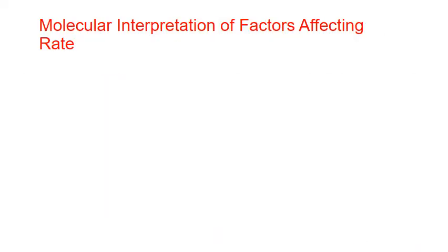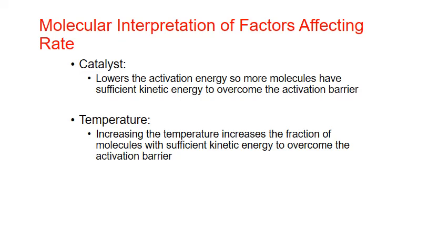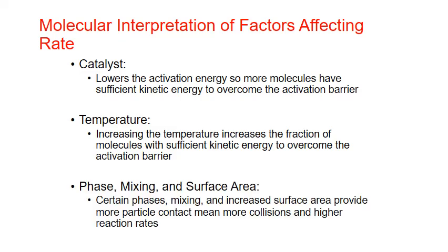Collision theory and the Arrhenius equation give us a basis for understanding why different factors like catalysts, temperature, phase, and mixing can influence reaction rate at the molecular level. Catalysts lower activation energy, and as we can see from the Arrhenius equation, with a lower activation energy, more molecules have sufficient kinetic energy to form an activated complex and overcome the activation barrier. Increasing the temperature also increases the fraction of molecules with sufficient kinetic energy to overcome the activation barrier. Certain phases, the degree of mixing, and increased surface area for reactants can provide more particle contact, which means more collisions between reactant molecules and higher reaction rates.